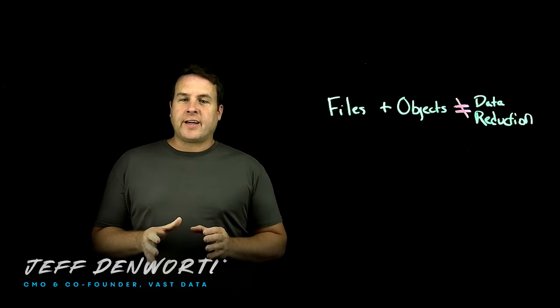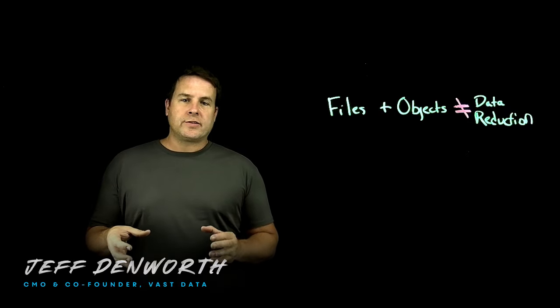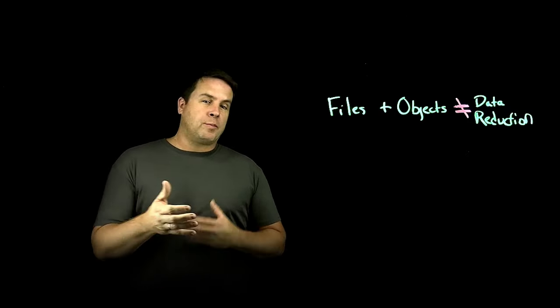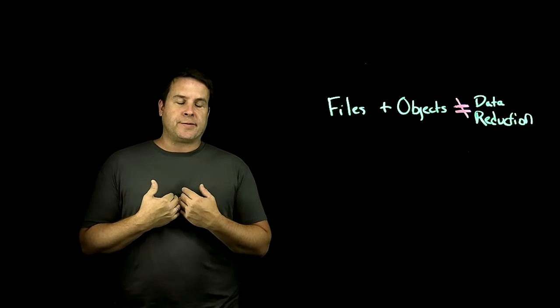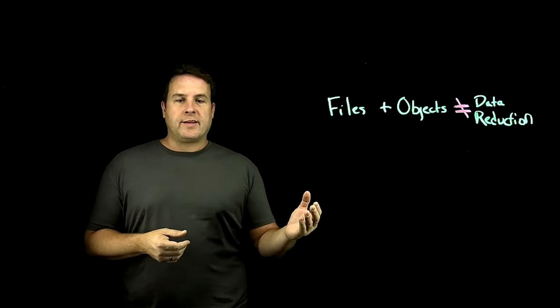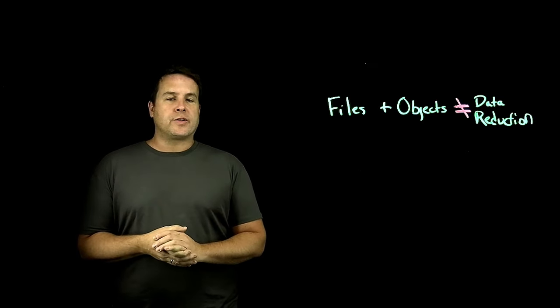One of the most common responses I get back from customers when I explain how next generation levels of data reduction can be achieved when applying them on top of a new systems architecture like we have with our VAST system is that their files or their objects are already reduced using some compression method, that you're not going to be able to see any additional gains from VAST's universal storage.